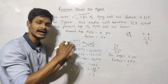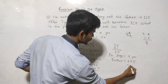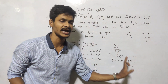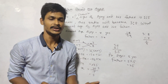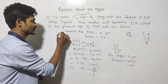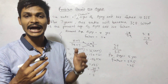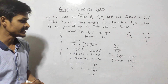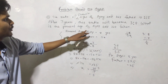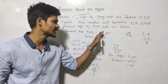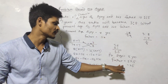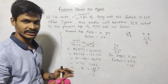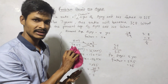So the answer is 5 and 25. This is the general method, and now we will show you a trick. The present age of Ojoy — the options are 5, 7, 10.